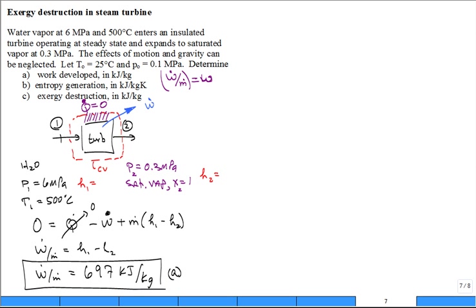Now let's look at part B. What is the entropy generation in kilojoules per kilogram Kelvin? What symbol should I use? Is it sigma dot divided by m dot? What's the strategy to solve for part B?